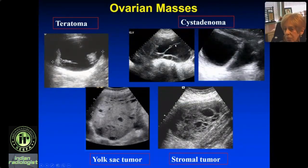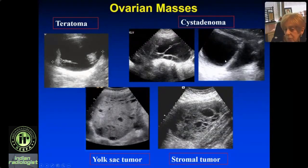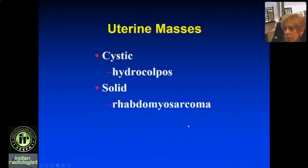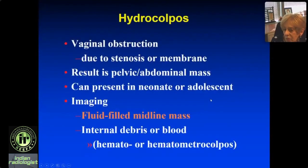To summarize ovarian masses: teratoma is cystic with peripheral nodules. The cystadenoma is cystic — the mucinous one has septations, the serous one looks like just a big simple cyst. If it's solid, it's malignant — in the adolescent girl it's a germ cell tumor, and in the prepubertal girl it's the sex cord stromal tumor.